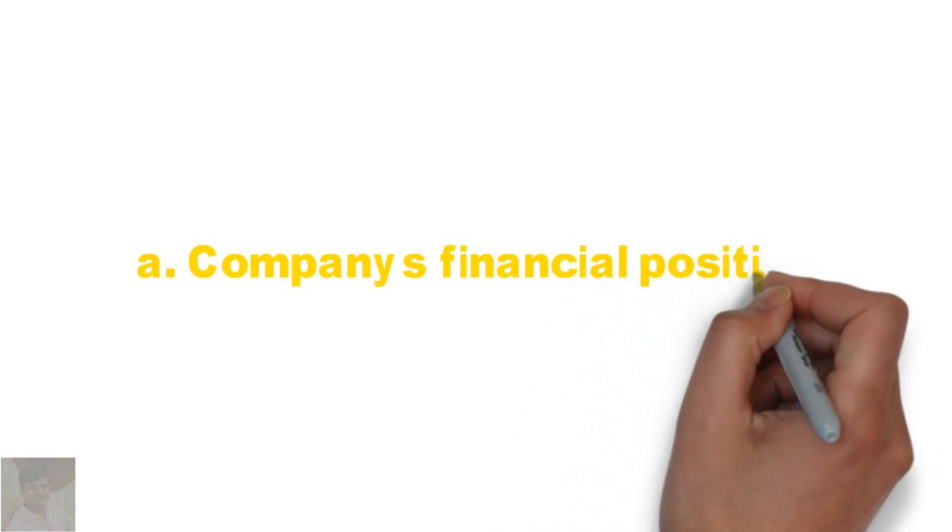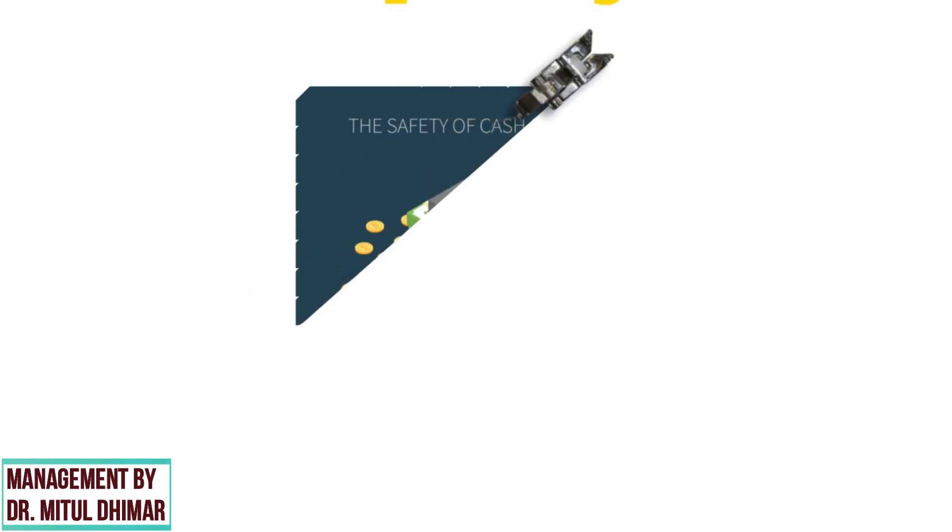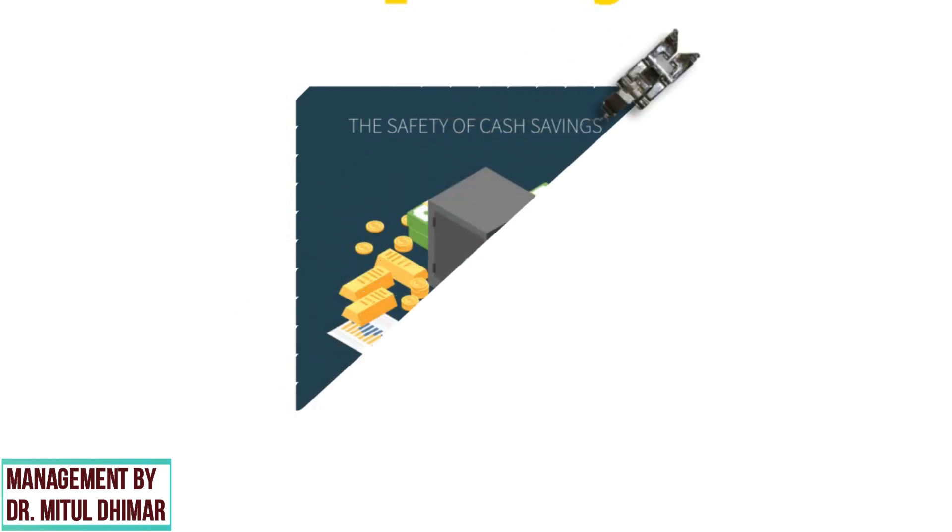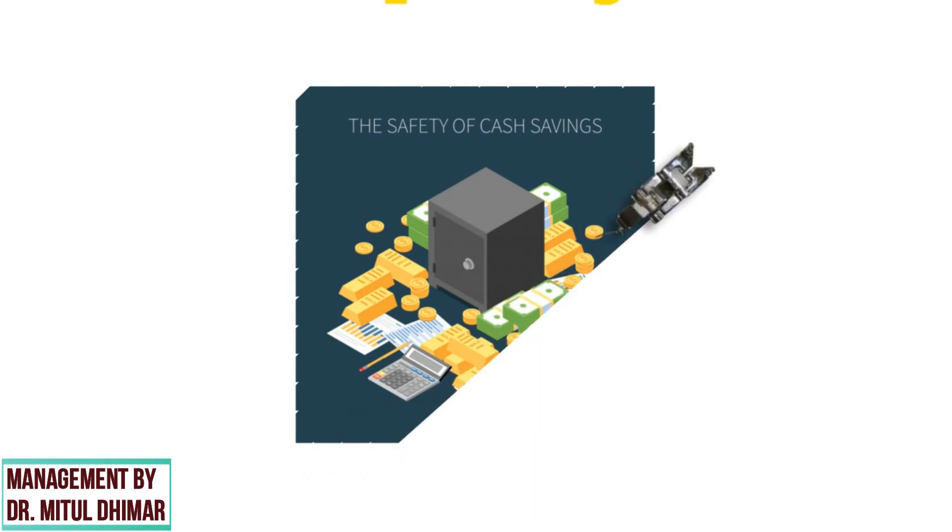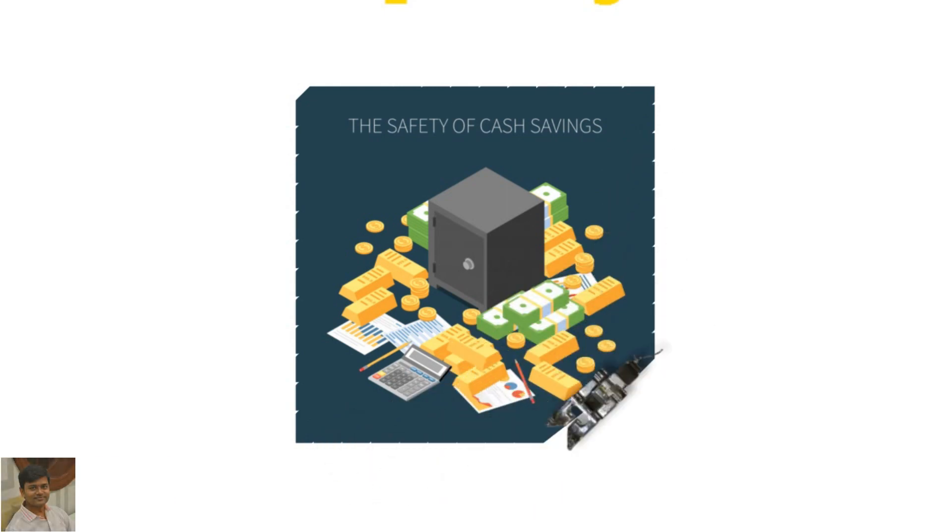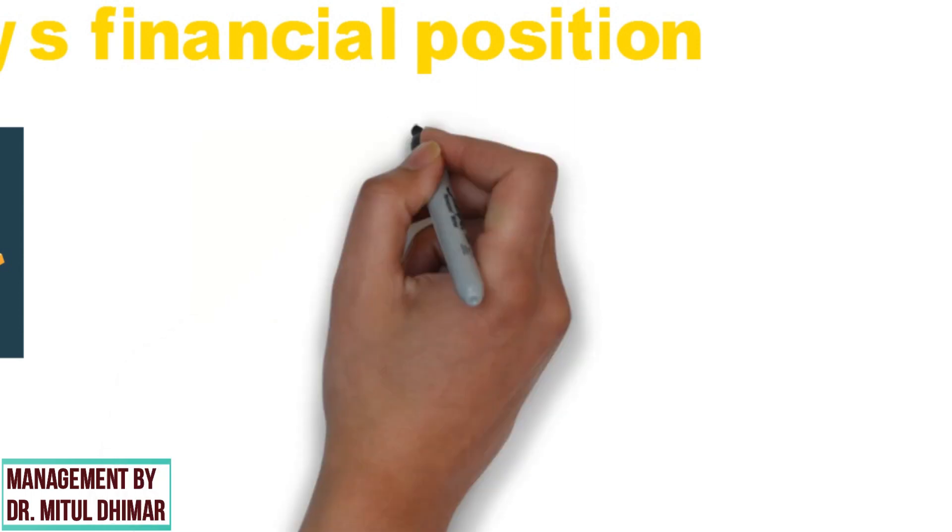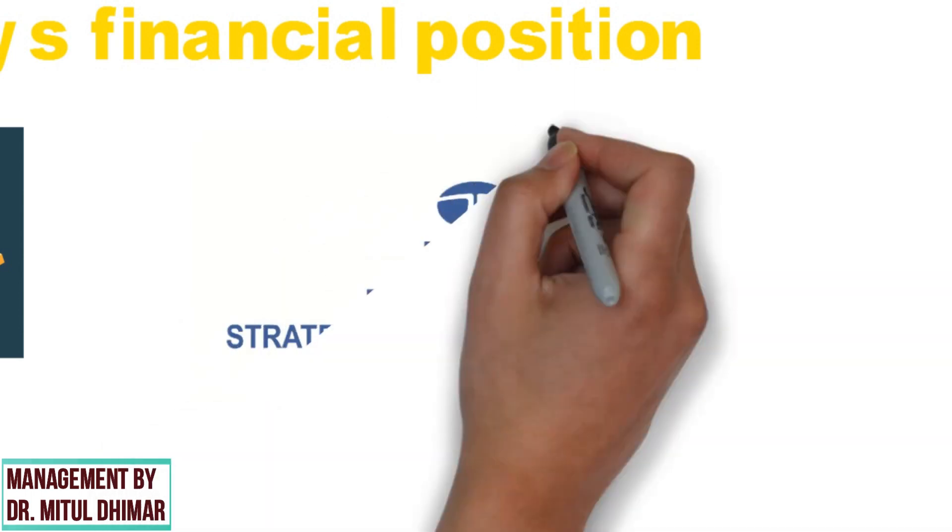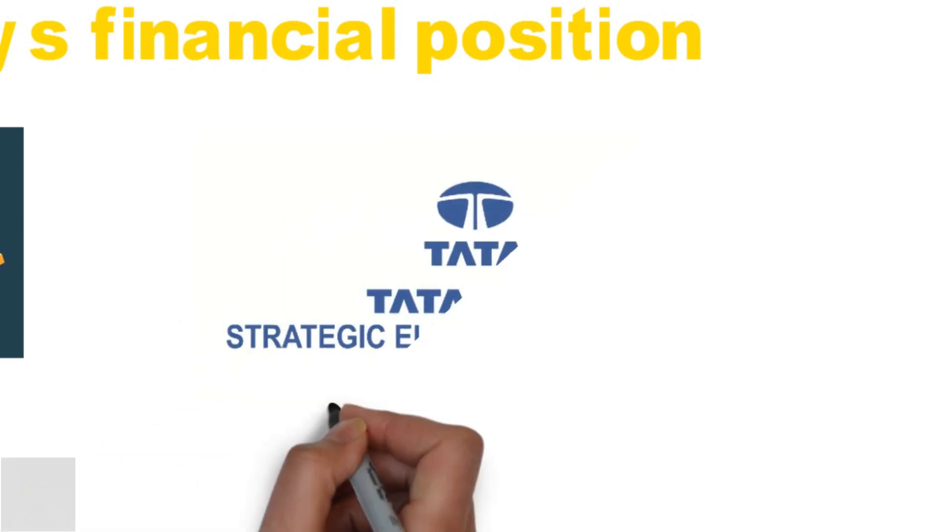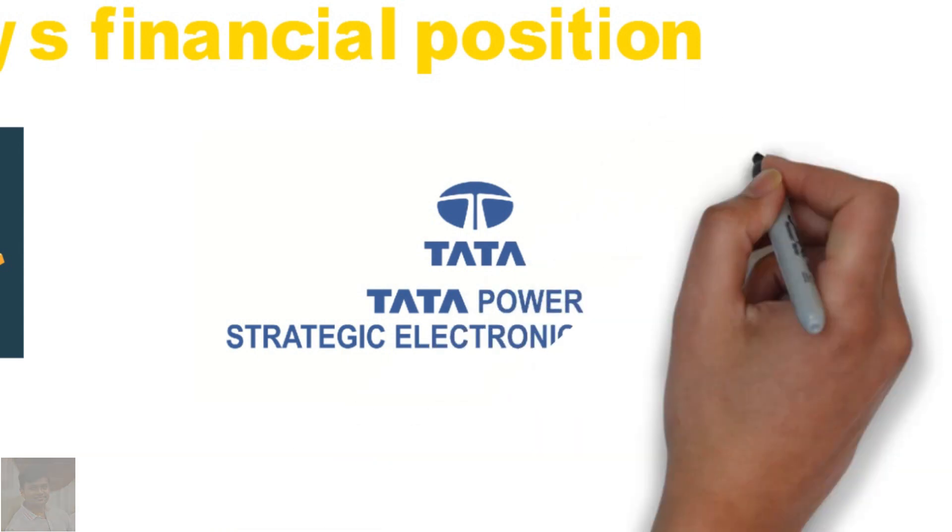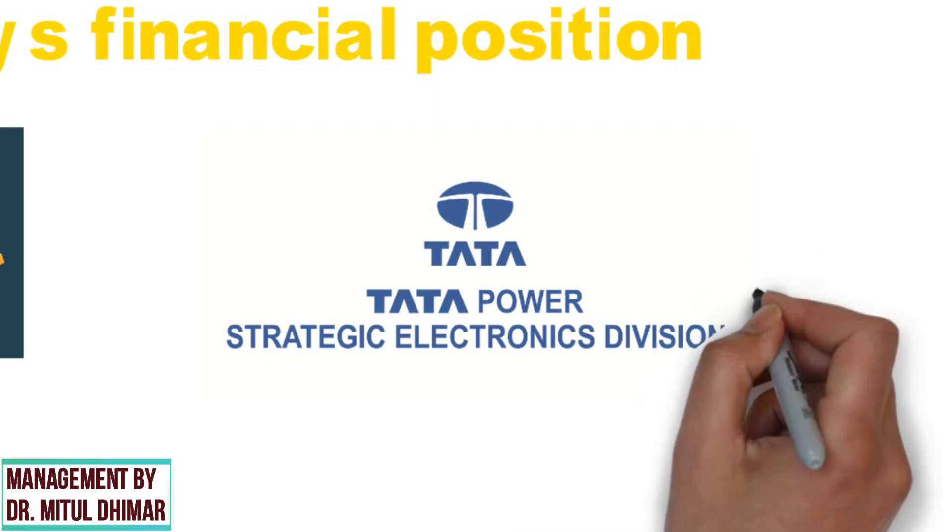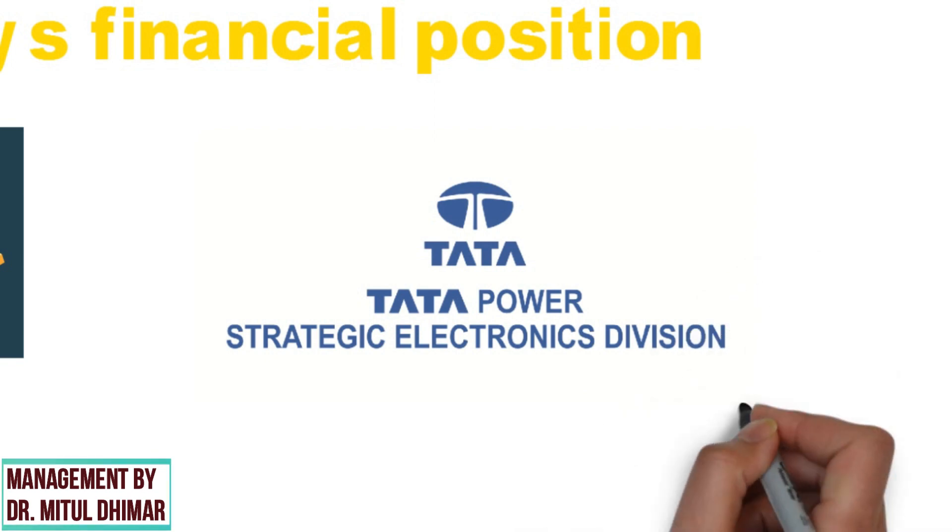First factor is company's financial position. Financially sound companies can maintain separate well-equipped channels for product distribution. These companies can open and manage their own point of sale and hire salespeople to manage distribution effectively. For example, today Tata Power Company Limited is the largest private sector electricity generation company in India with an installed capacity of over 2,977 megawatts.